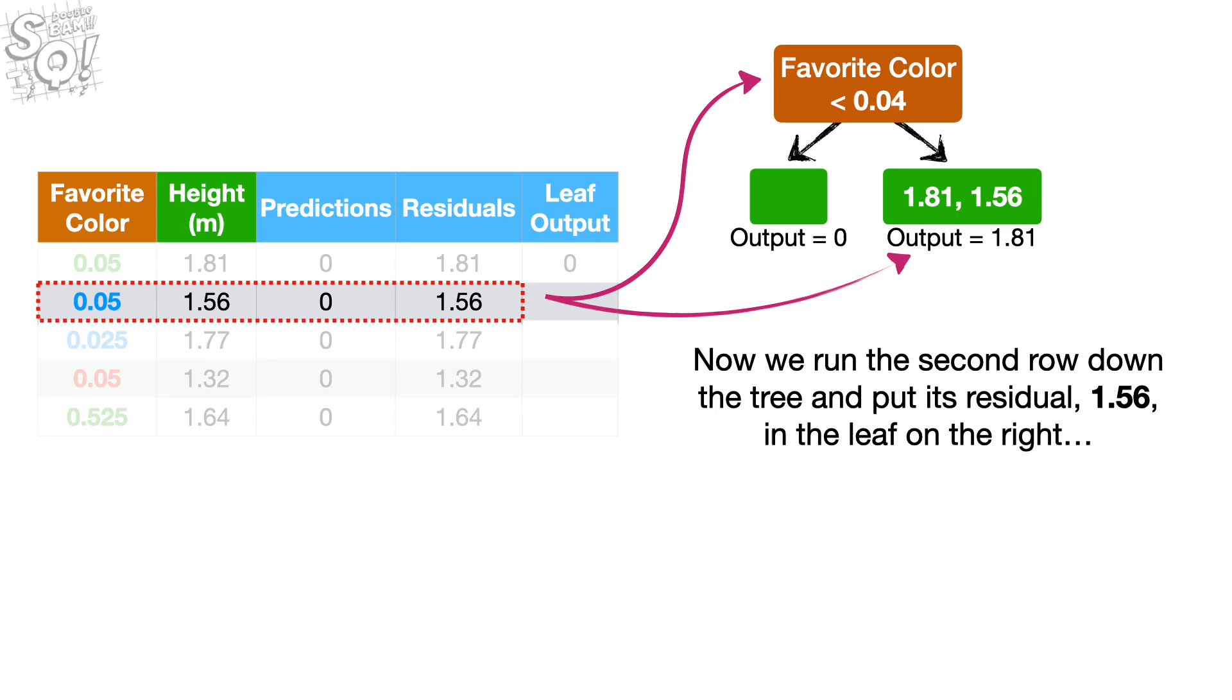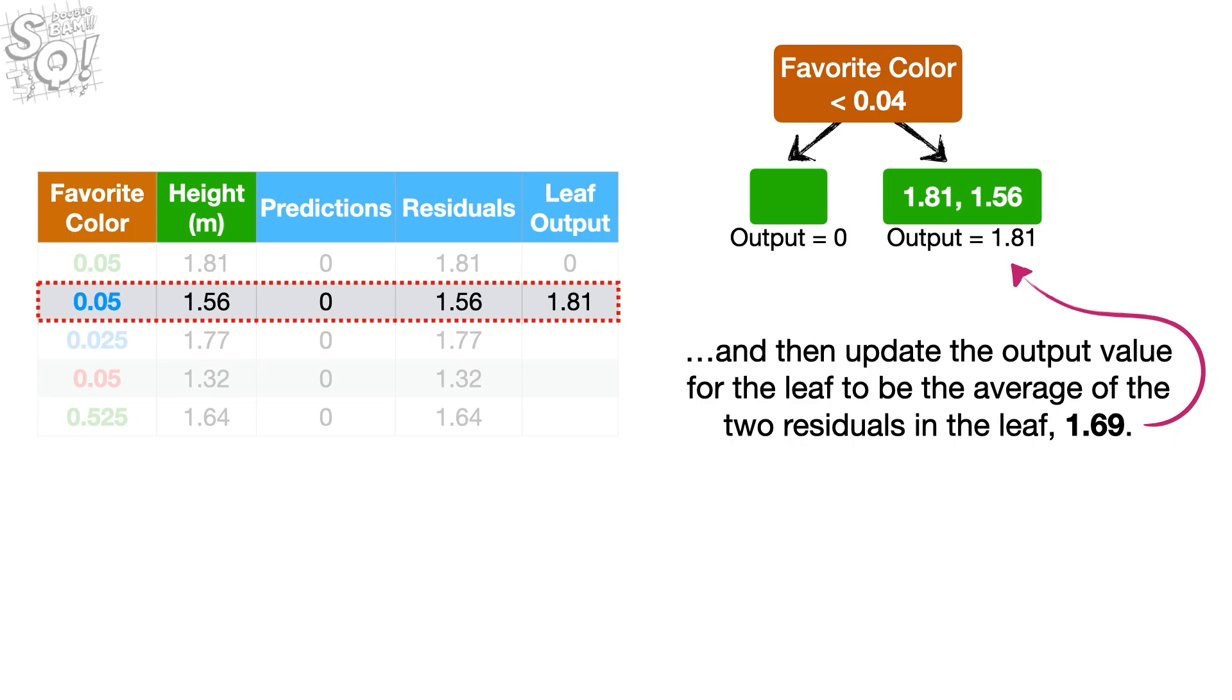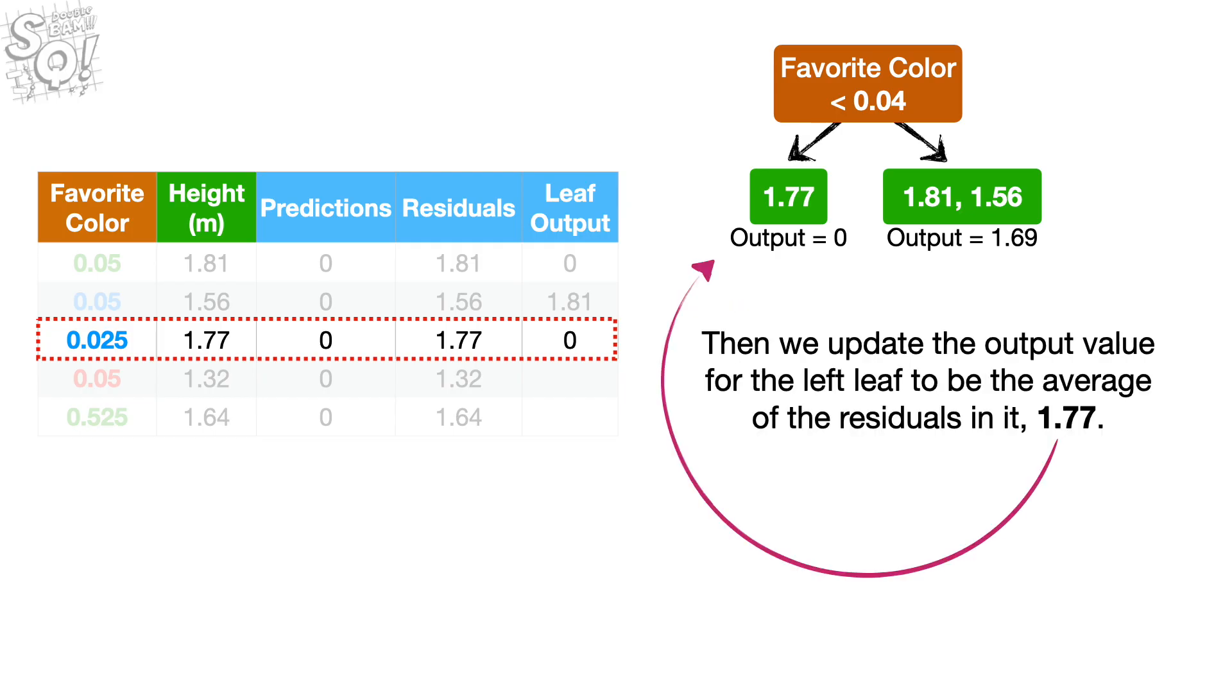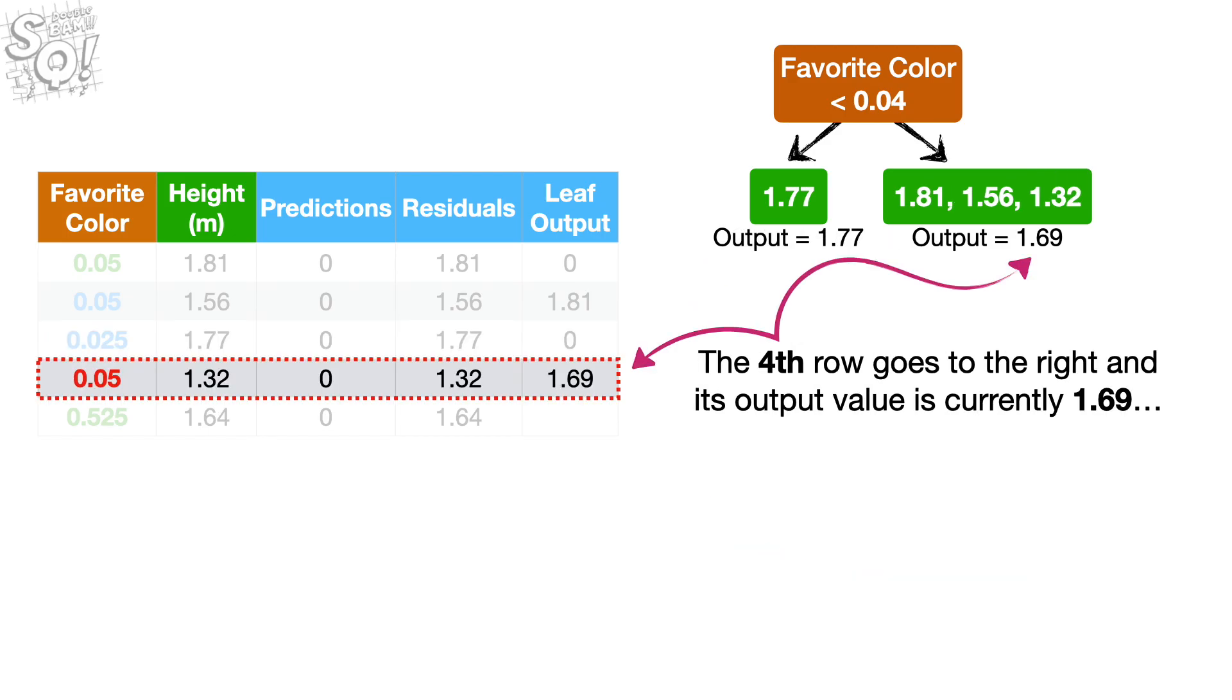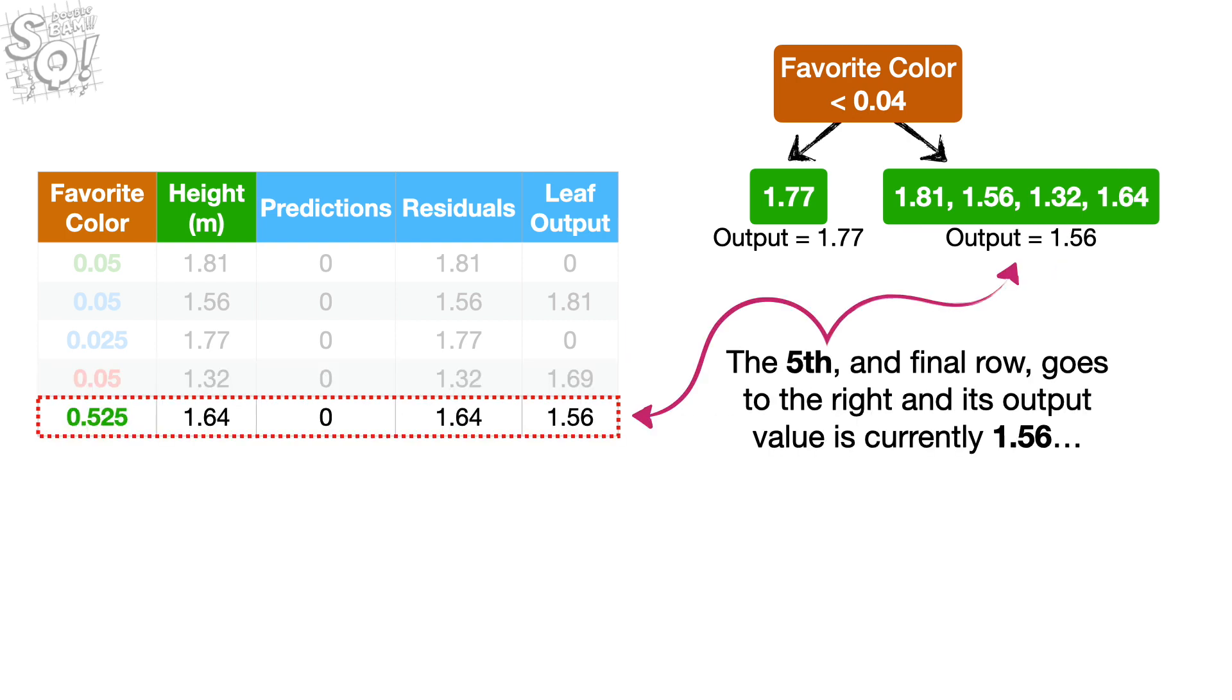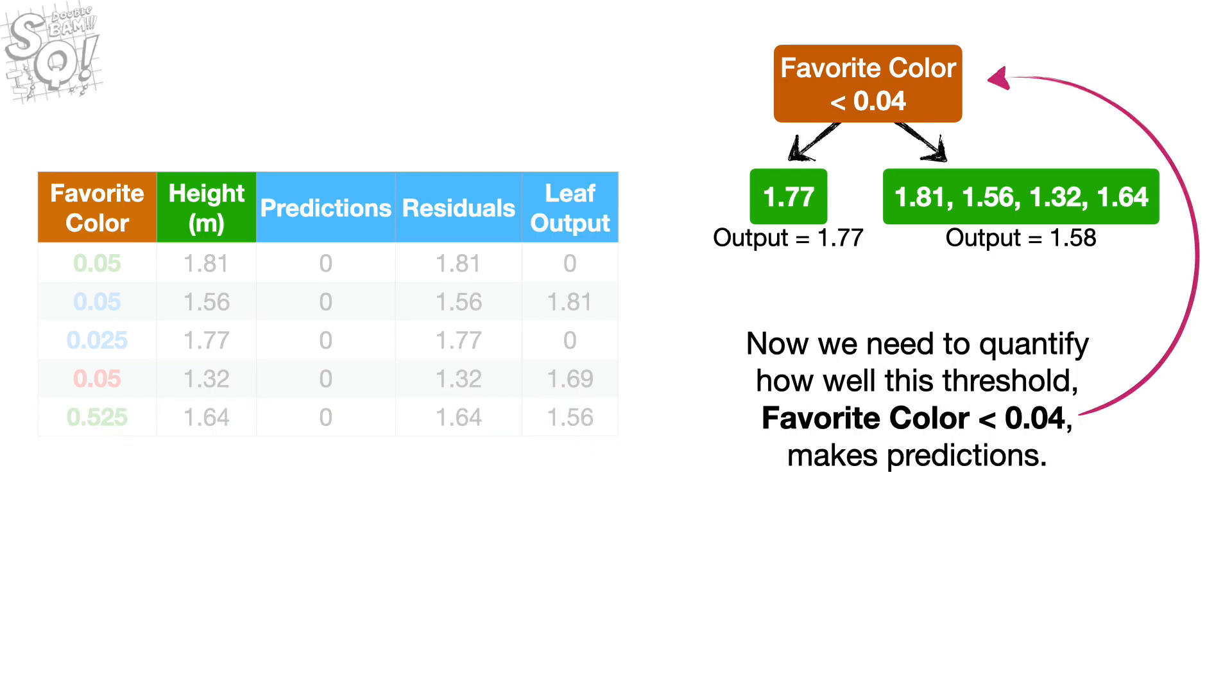Then we keep track of the output for that row, which is currently 0. Then we update the output of the leaf to be the average of the residuals in it, which, in this case, is 1.81. Now we run the second row down the tree and put its residual, 1.56, in the leaf on the right. And we keep track of the output, which is now 1.81, and then update the output value for the leaf to be the average of the two residuals in the leaf, 1.69.